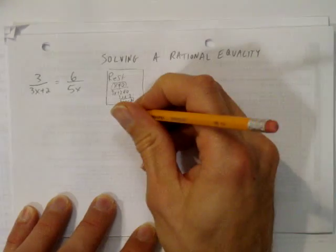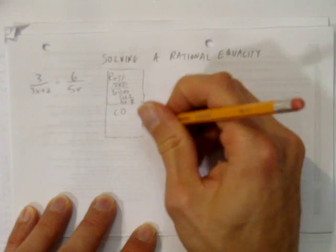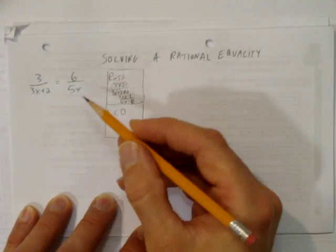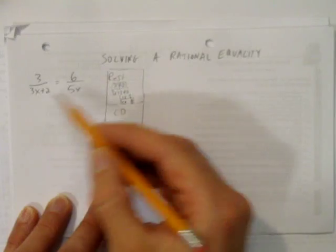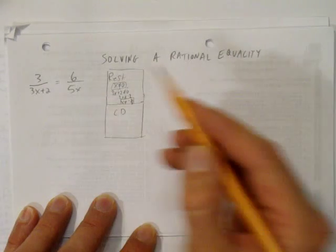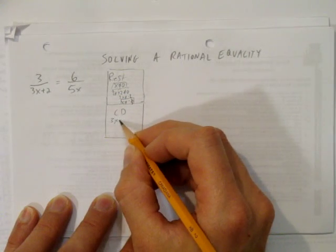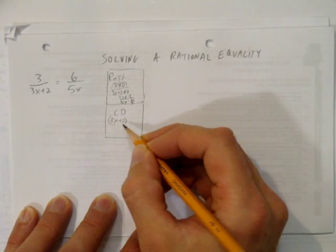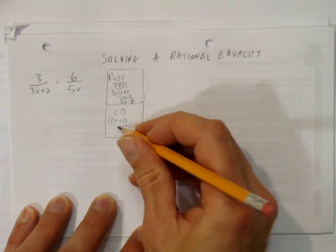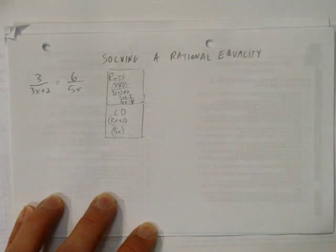Alright, we also want to record the common denominator. That is, we need a denominator that we're going to multiply both sides by to get a common denominator. This side here has 3x plus 2. That's going to be one of our factors for our common denominator. The other is going to be 5x.